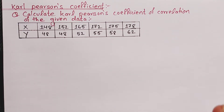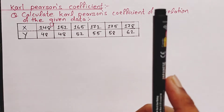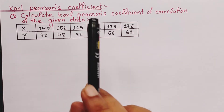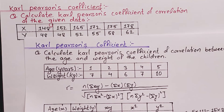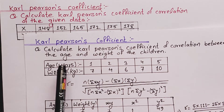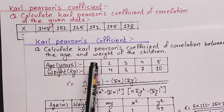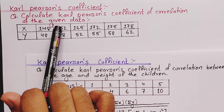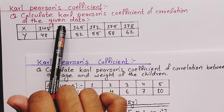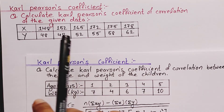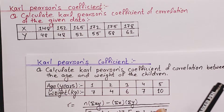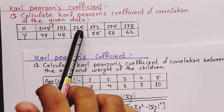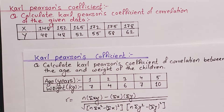Hey guys, welcome back to Civil Learning Online. Today I am going to discuss a problem based on Karl Pearson's coefficient — this is my second example for this method. In the previous video I showed an example where the variation in x was very small, like differences of one or two. But here the differences are larger, like 148 to 152 is four and 152 to 165 is 13. So the solution will be a bit different. The link for the previous video is in the description — do watch that first, then come to this video.